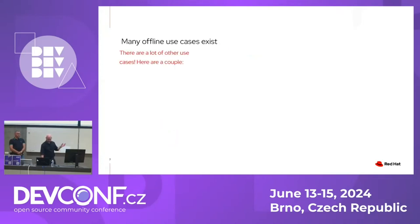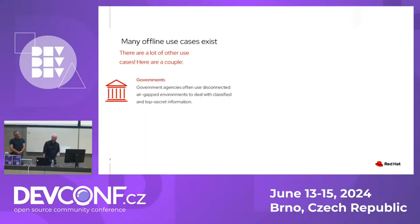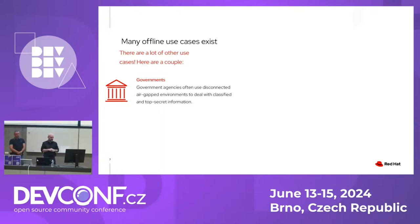What are some of the use cases for why you would need offline? The most obvious one is governments. Government agencies often have disconnected network centers where they deal with classified, top secret information, and there can be no internet connection. All the terminals have to be air-gapped — not physically even close to anything that has an internet connection. This is generally the three-letter acronyms, like the CIA and FBI. That's the first most obvious case, and we have a lot of customers in that space, in the public sector.